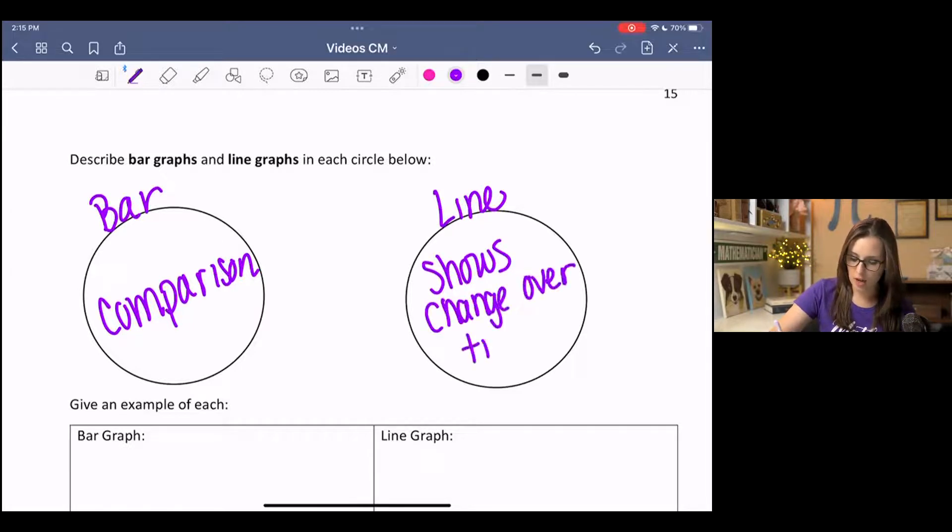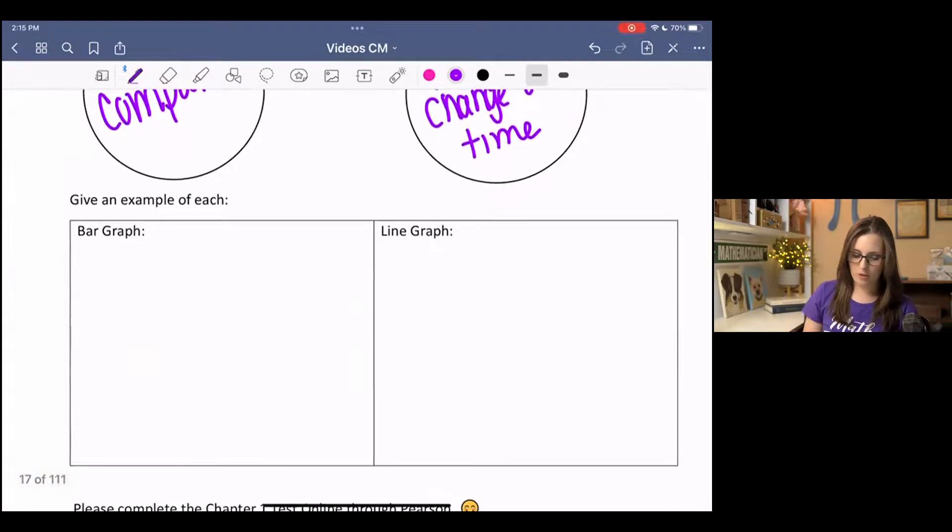And it usually has this little zigzaggy line that goes across the graph with dots on years, usually. So an example of each of these, an example of a bar graph,